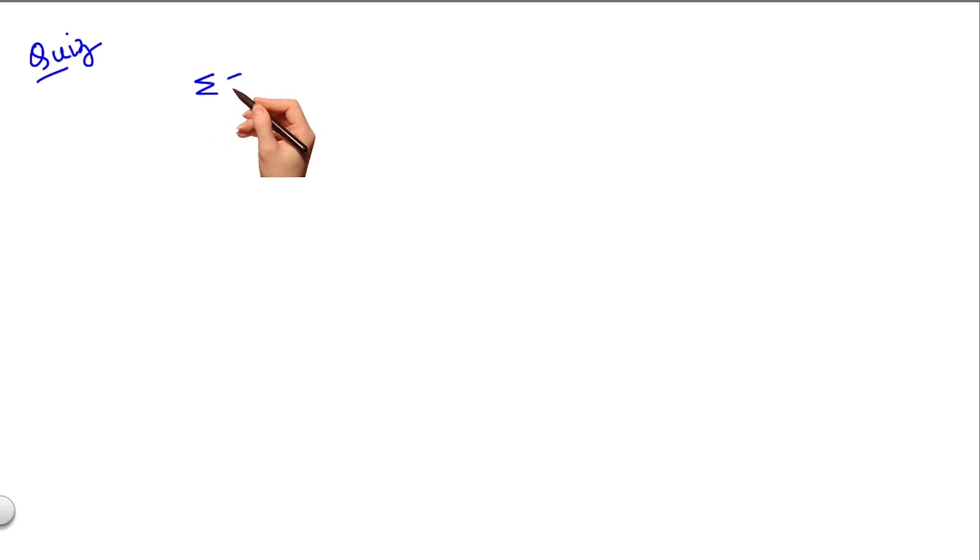What is the value of double summation c r plus c s, r varying from 0 to n, s varying from 0 to n? Your options are the following.